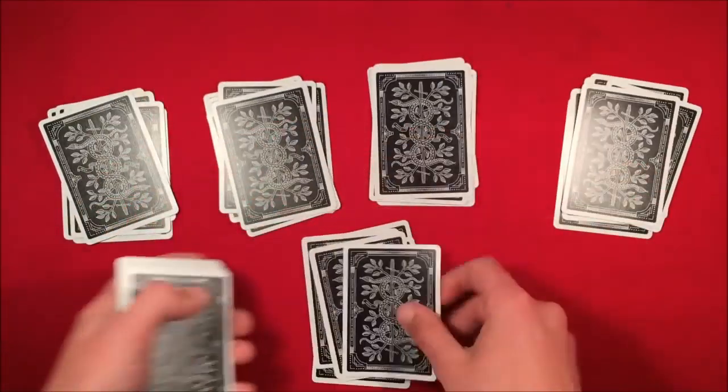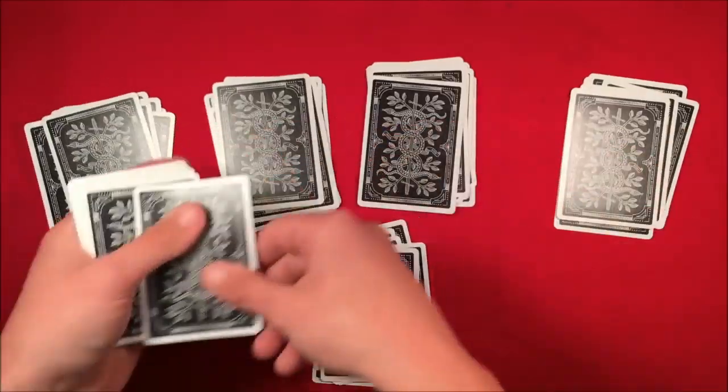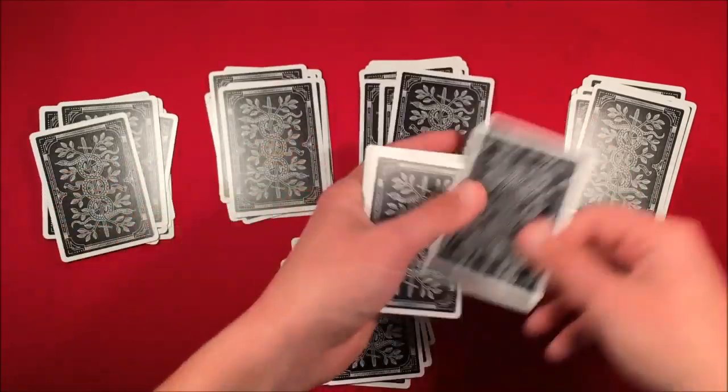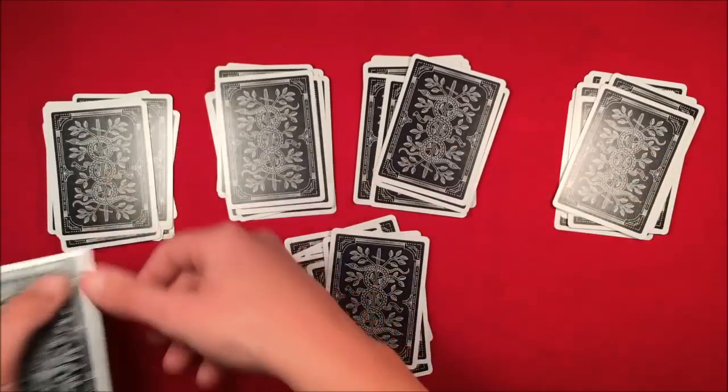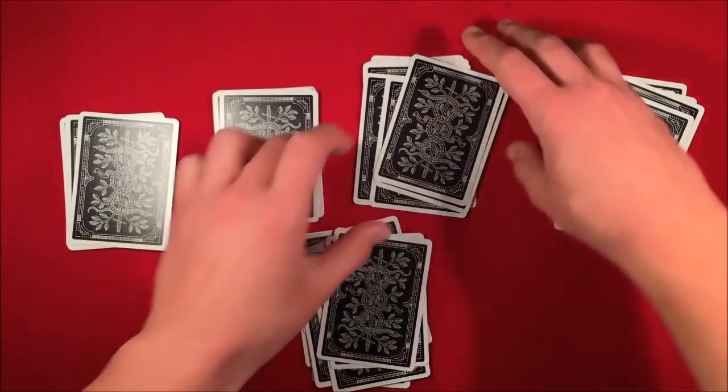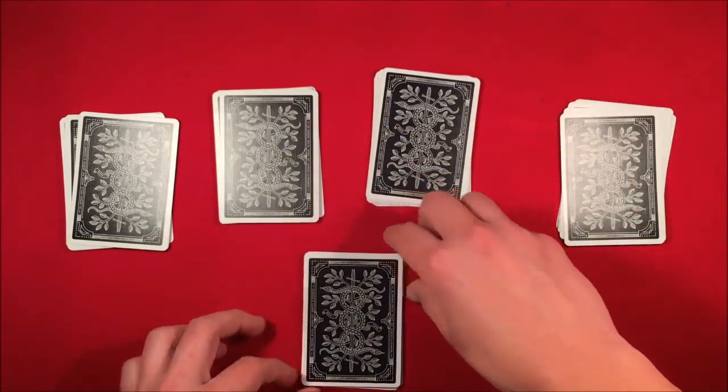So in the performance I actually estimated there was 28 cards in the packet and I laid out I believe four piles. And the way this trick works is you take the number of cards you estimate and you divide it by a number that's divisible, and the answer to that division problem is how many cards up from the bottom of one of the packets is the position of your card. So like I said it's kind of difficult to explain.